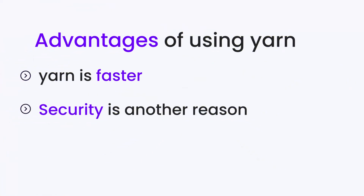Now let's jump into its advantages. Yarn is faster — that's the main thing. Yarn is almost twice as fast as npm because it parallelizes operations to maximize resource utilization, so installation time is much faster. Secondly, security is another reason to use Yarn, as it installs only those files which are listed in the yarn.lock or package.json files.